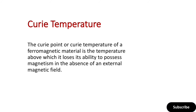Next is the Curie temperature. The Curie temperature of a ferromagnetic material is the temperature above which it loses its ability to possess magnetism in the absence of an external magnetic field. Above this temperature or point, the ferromagnetic material can no longer retain magnetism without an external field. This temperature is called the Curie temperature.